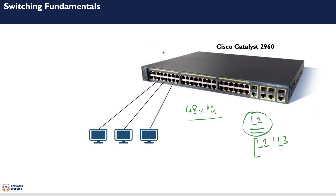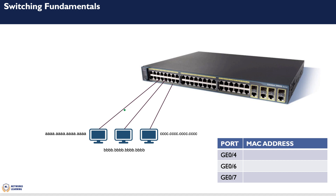Design-wise, where would you find your layer 2 switches? Typically you will find them in the wiring closet, where they will be terminating a lot of hosts, PCs, and maybe some IP phones. You will have them on different floors in a campus building. Since the layer 2 switch operates at layer 2, it forwards frames between hosts.